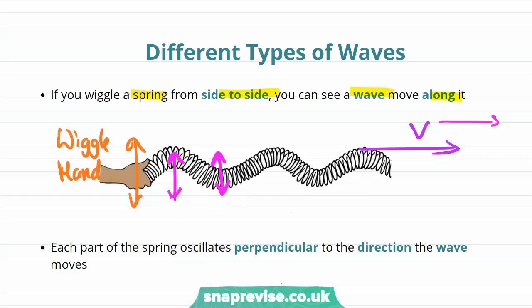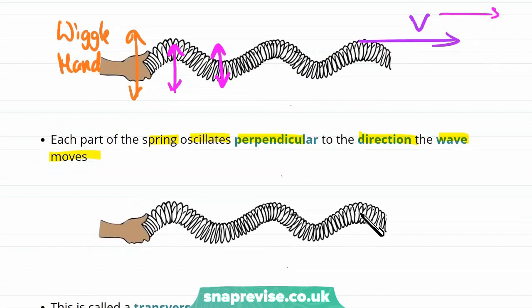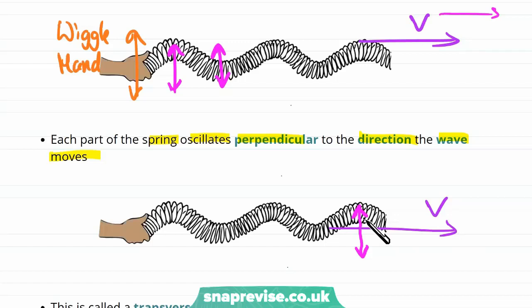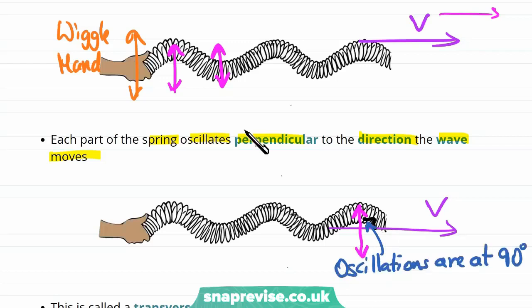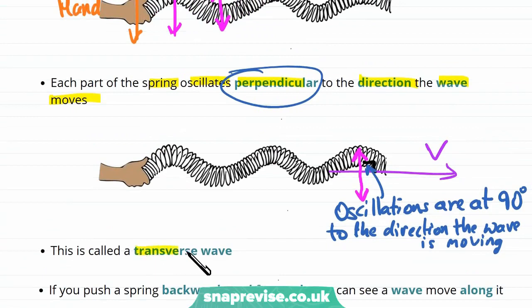This highlights something quite interesting about this wave. Each part of the spring is oscillating perpendicular to the direction that the wave is moving in. For example, this part of the spring is moving up and down in this direction, but the wave is moving away from the hand in this direction. We see that we have a right angle, so the oscillations are at 90 degrees — perpendicular to the direction that the wave is moving. Not all waves act like this, so this is a special type of wave and we call it a transverse wave.